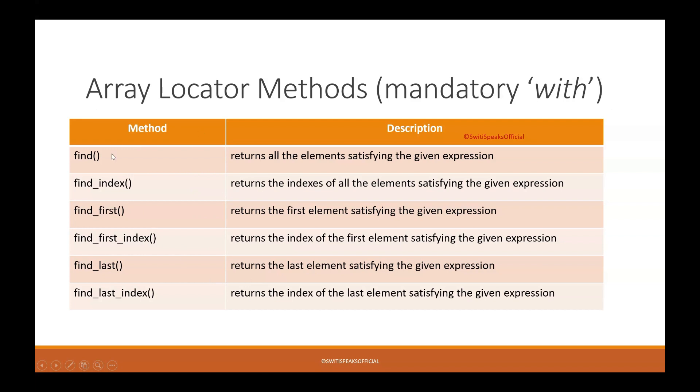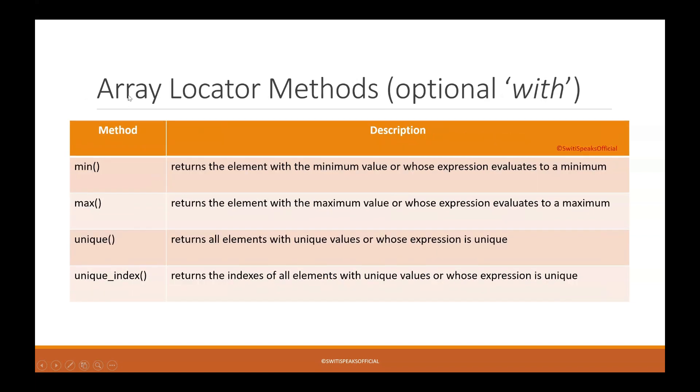Let us see the Array Locator Methods with optional with clause. The first one is minimum. It returns the element with minimum value, or in case you are using expression, it returns an element whose expression evaluates to a minimum. Maximum returns the maximum value.